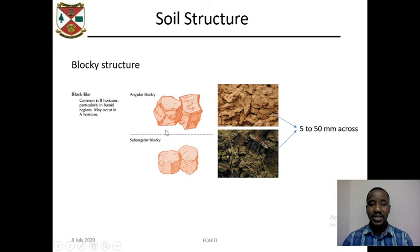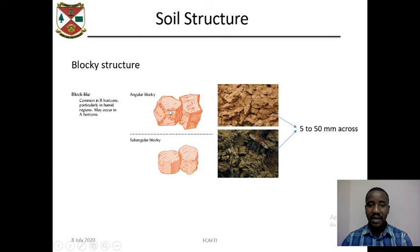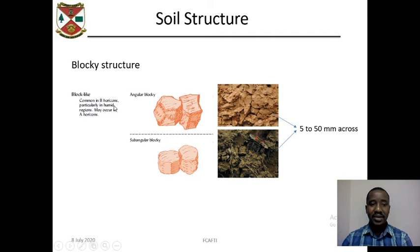Angular blocky structures have very sharp edges, while the edges of sub-angular blocky structures are curved and not so sharp. These structures are commonly found in the B horizon or in the sub-soil, but are rare in humid regions and may occur sometimes in the A horizon.